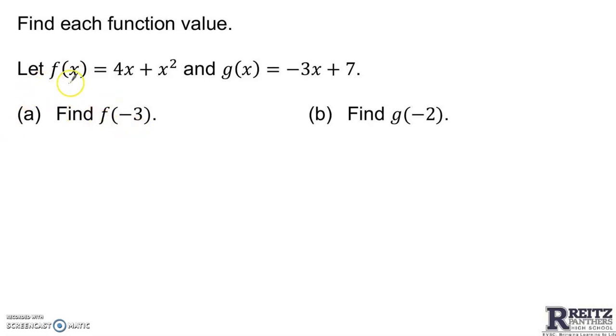To find f of negative 3, we need to use the rule for function f. Everywhere we see x, we need to replace x with negative 3. So 4 times x is 4 times negative 3 plus x squared. x squared is negative 3 squared. Now all you need to do on the right-hand side is order of operations.